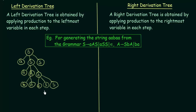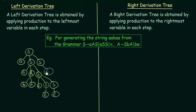Now we have obtained the string A, A, B, A, A. But I still have some remaining variables S that need to be resolved. Starting from the leftmost, I give epsilon to the first S, then epsilon to the next S, and then the remaining S at the previous level also gives epsilon. Now we have completed the left derivation tree and obtained the string A, A, B, A, A.